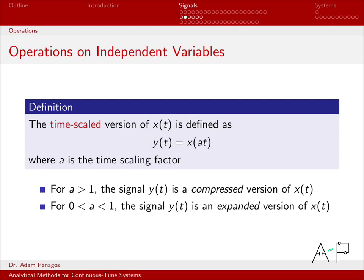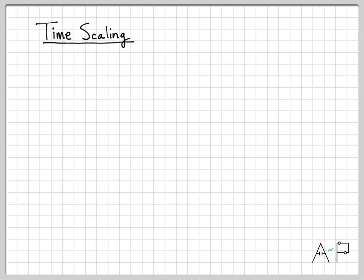If we have values of a that are in between 0 and 1, say 0.2 or 0.4 something like that, then if we look at y(t) it will be an expanded version of x(t). So it'll still look like the original signal but it will be stretched out or expanded on the time axis. So that's what time scaling is, it's just replacing t with at.